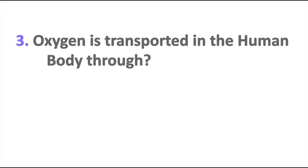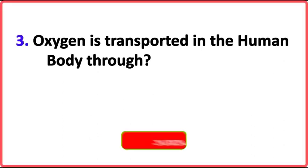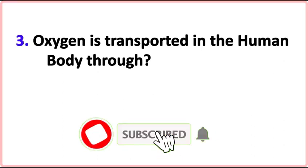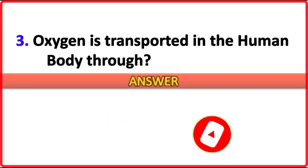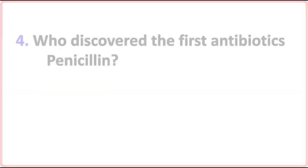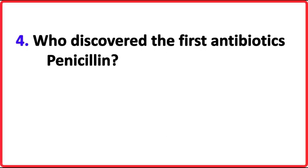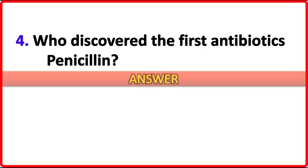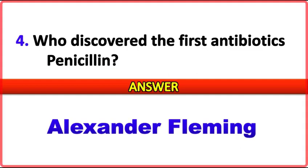Oxygen is transported in the human body through? Answer: Blood. Who discovered the first antibiotic, penicillin? Answer: Alexander Fleming.